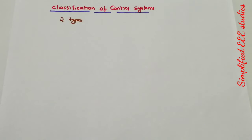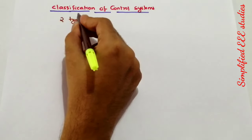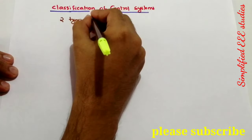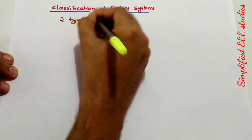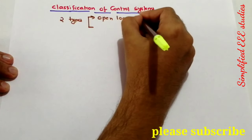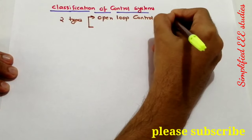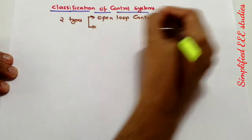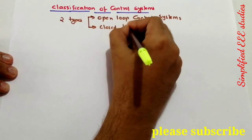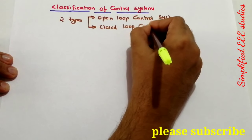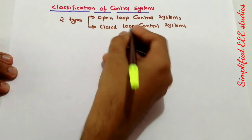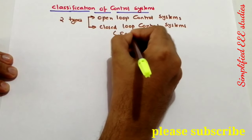Hello everyone, welcome back to my YouTube channel. In this session I will be explaining classification of control systems. There are two types: the first one is open loop control system, and the second is closed loop control system. Closed loop control system is also known as feedback control system.